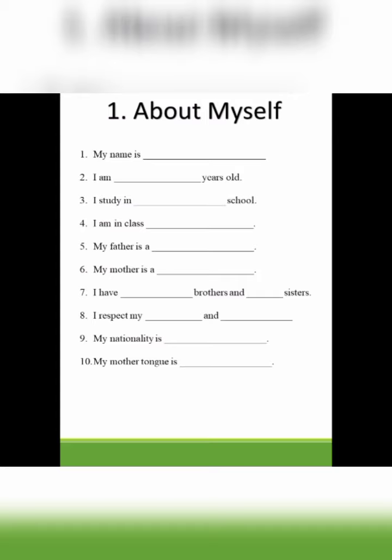Number five: My father is a dash. Here, children, you will write what your father does. He is a doctor, he is an engineer, he is a farmer, he is a businessman — whatever your father does, write it here.